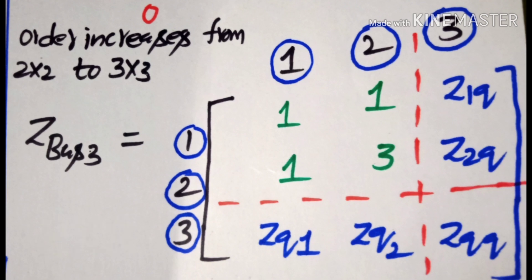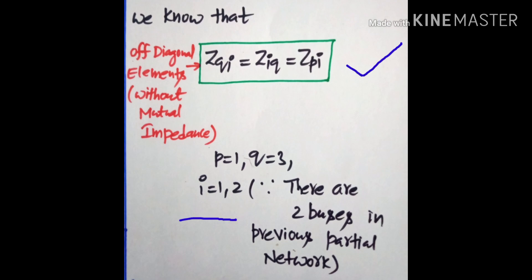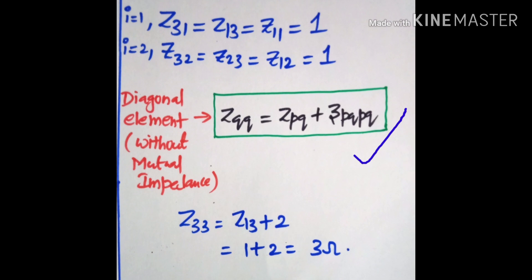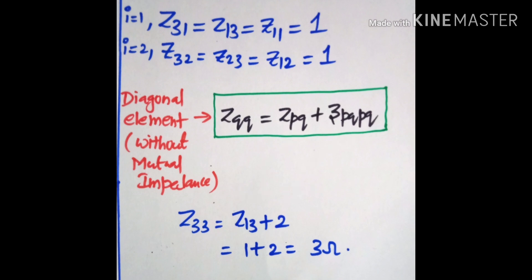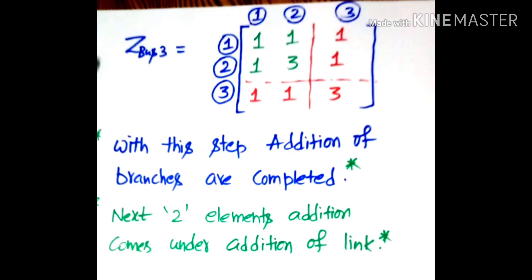Using the derived expressions for off-diagonal elements when mutual impedance is neglected, with P=1, Q=3, and i=1 to 2 (since there are two buses in the previous partial network), we obtain the off-diagonal elements for i=1 and i=2. Similarly, the diagonal element Z_QQ equals Z_PP plus the self-impedance of the added element between bus 1 and bus 3. In this way we obtain all diagonal and off-diagonal elements of the modified Z-bus matrix for this step.